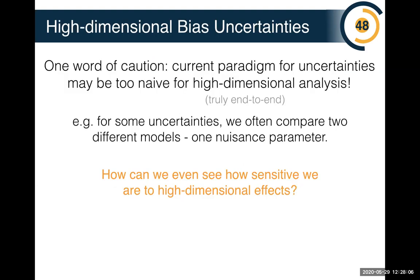Right now people typically estimate these uncertainties by comparing two different simulators and taking the difference as an uncertainty — supposed to capture a large swath of effects. This is obviously challenging because it's one nuisance parameter for many effects. I have a proposal not for making the uncertainty smaller, but as a diagnostic for quantifying sensitivity to high-dimensional mismodeling, borrowed from the field of AI safety.